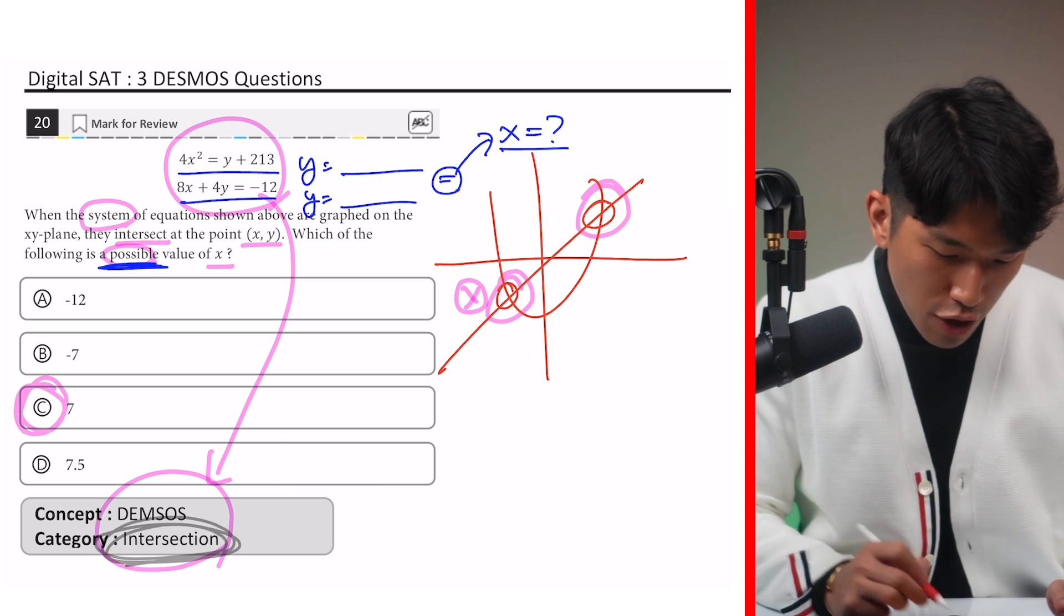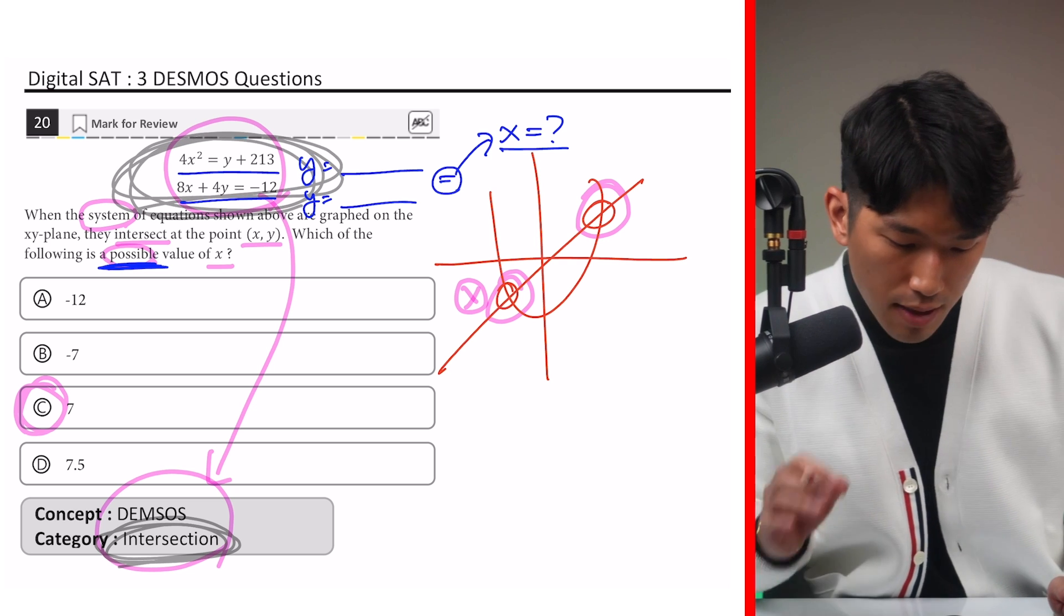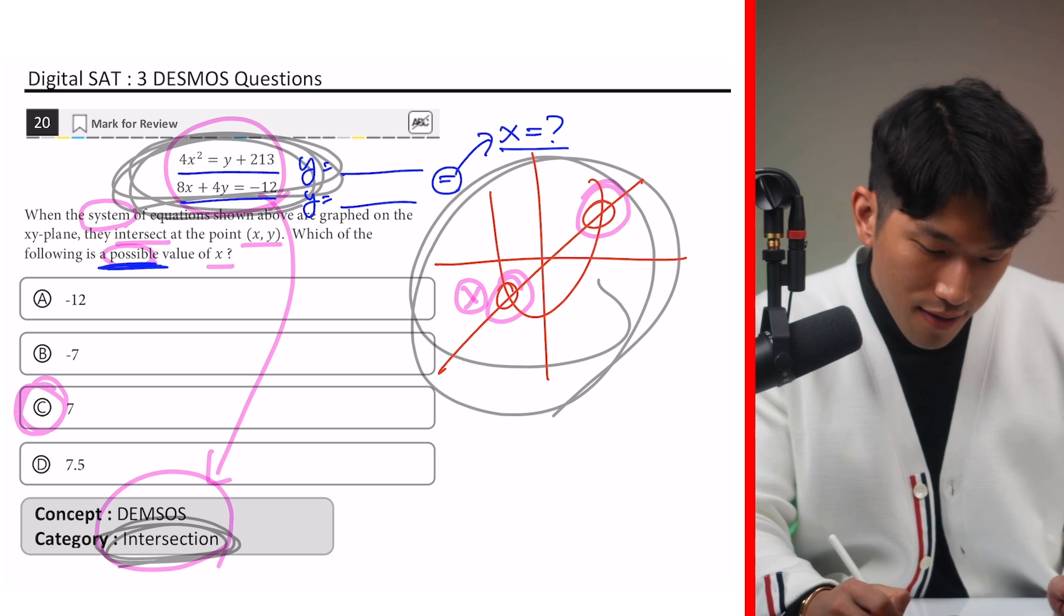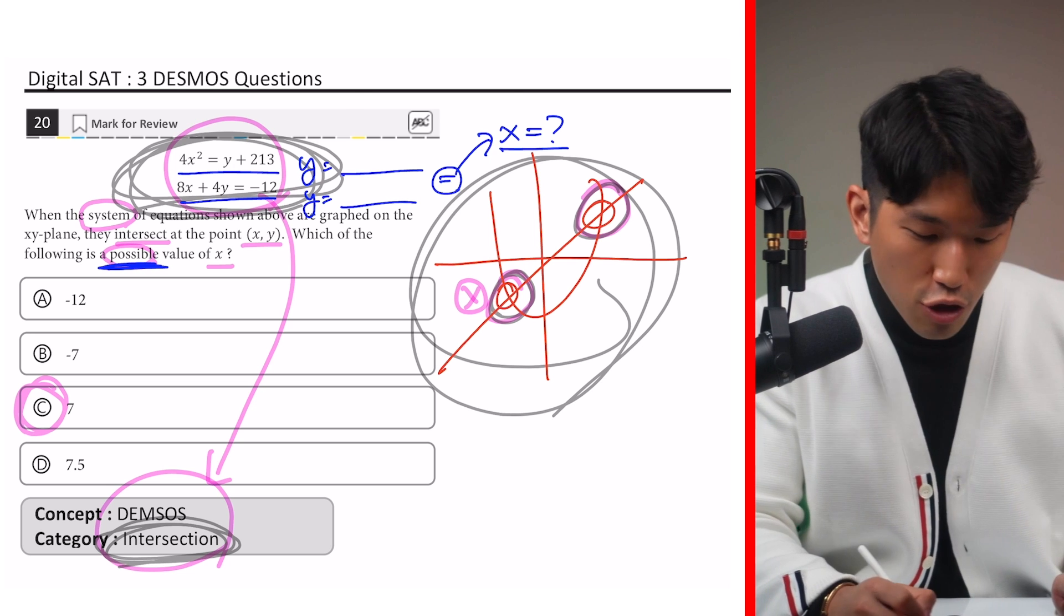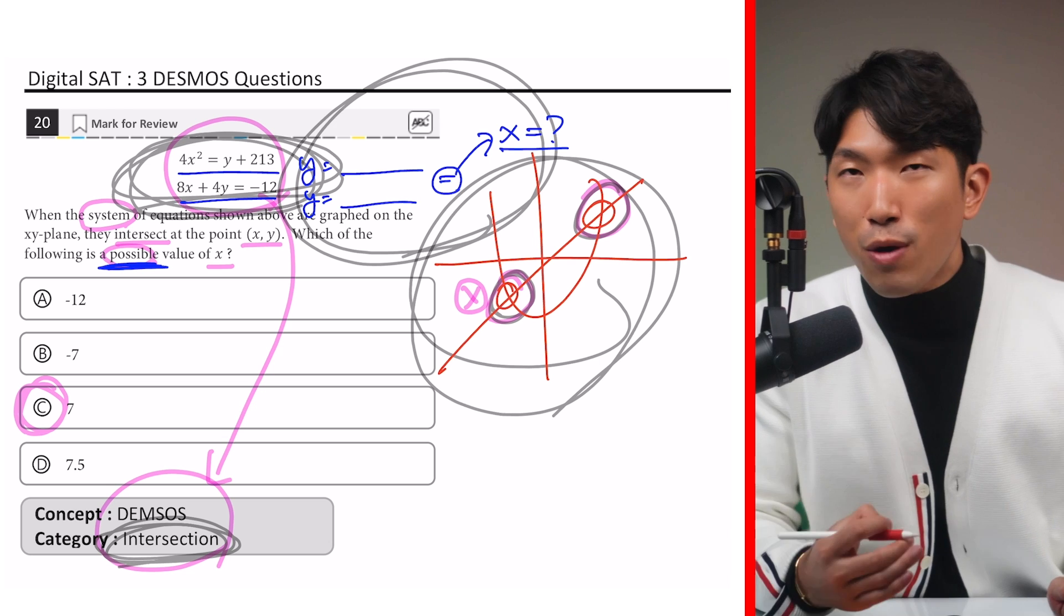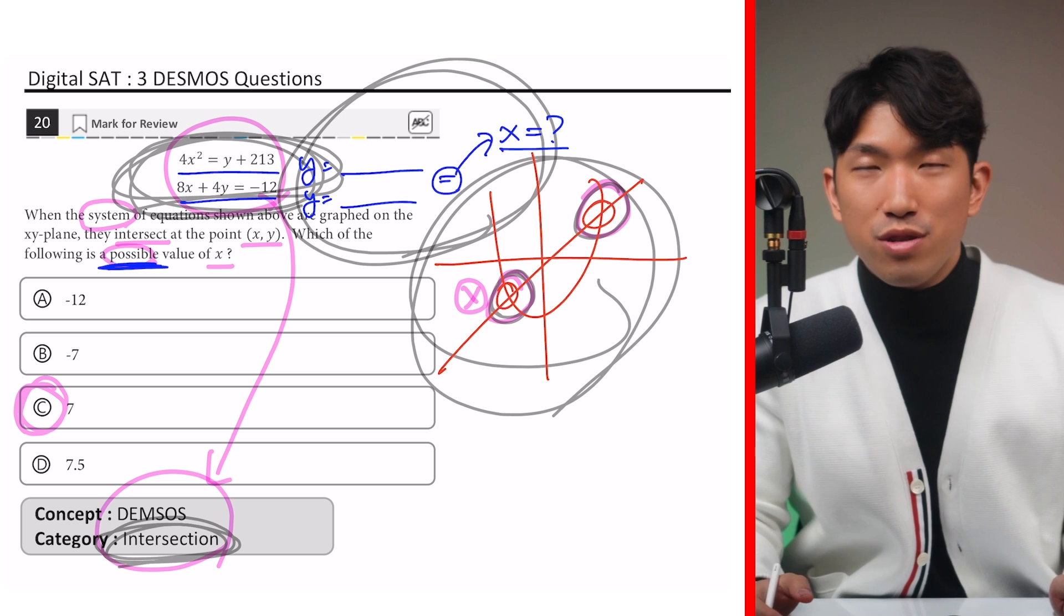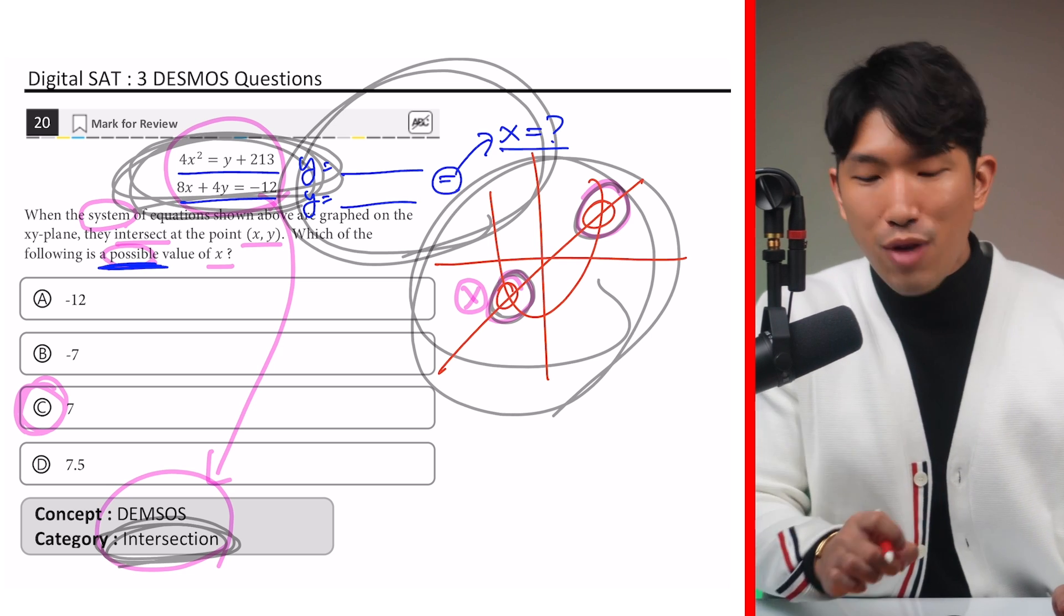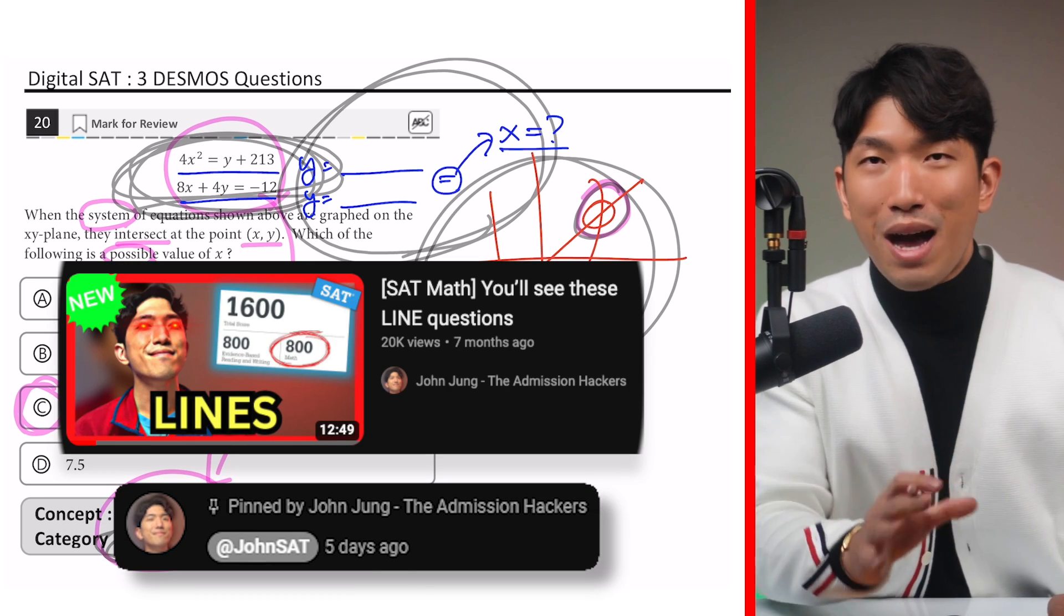So the main takeaway here is whenever you're looking for the intersection with complicated looking equations, simply pop it into Desmos and visualize what the graph actually looks like. Find out the intersection points and get your answer that way. But more importantly, you should know the old school methods of finding the intersection because they're having questions where the equations cannot be plugged into Desmos and you have to do it the old school route. So if you're aiming for anything above 400, know both routes.